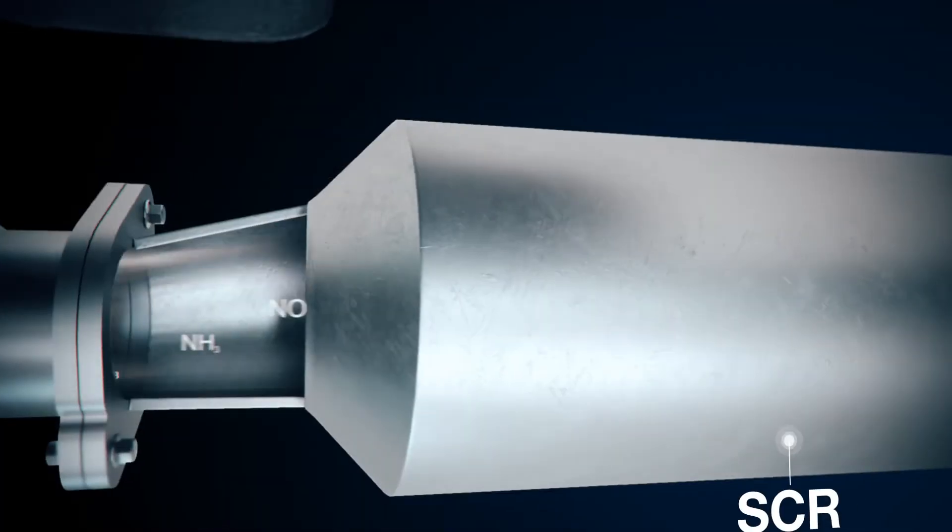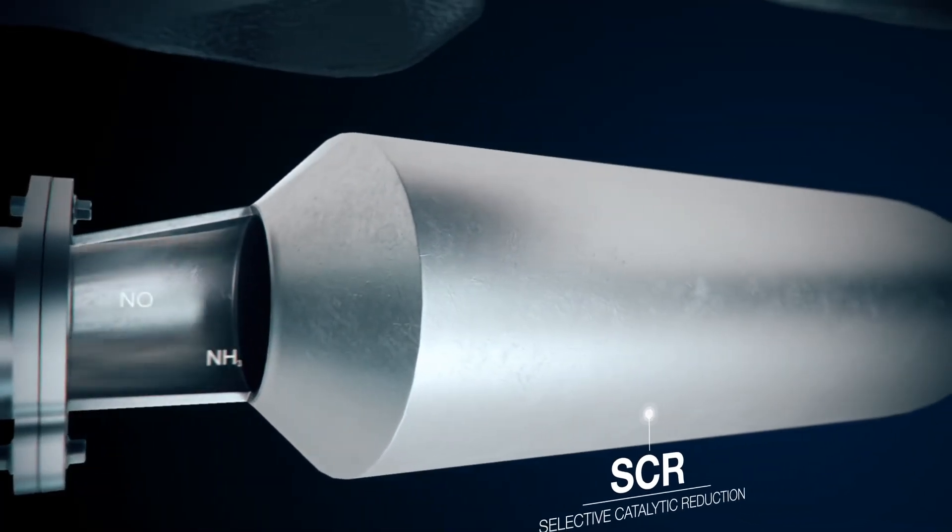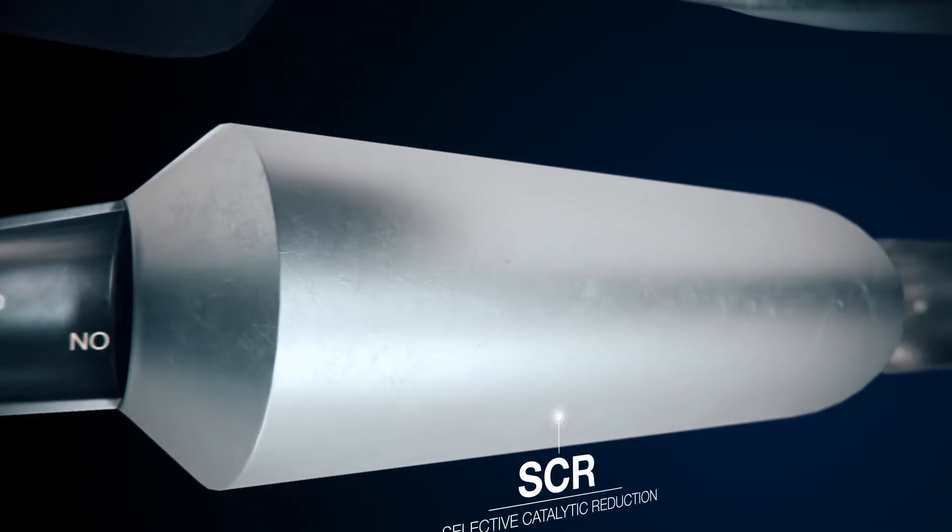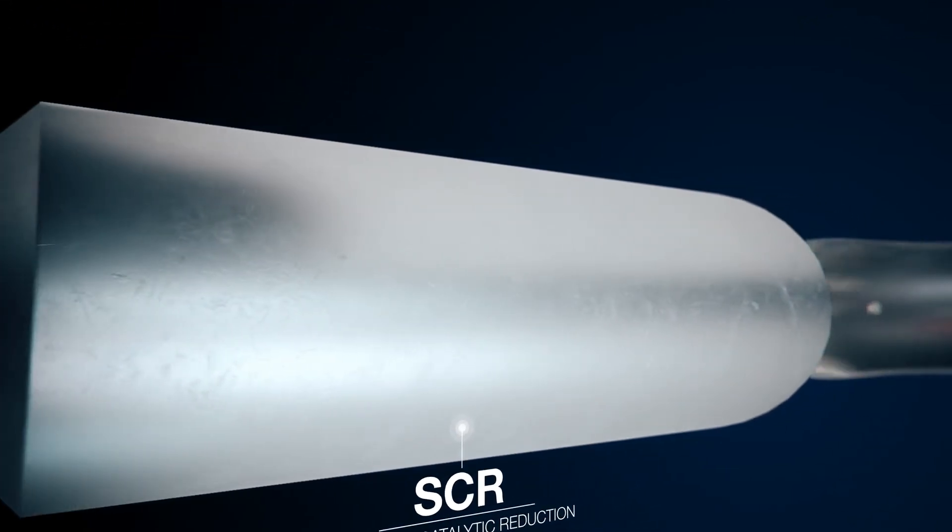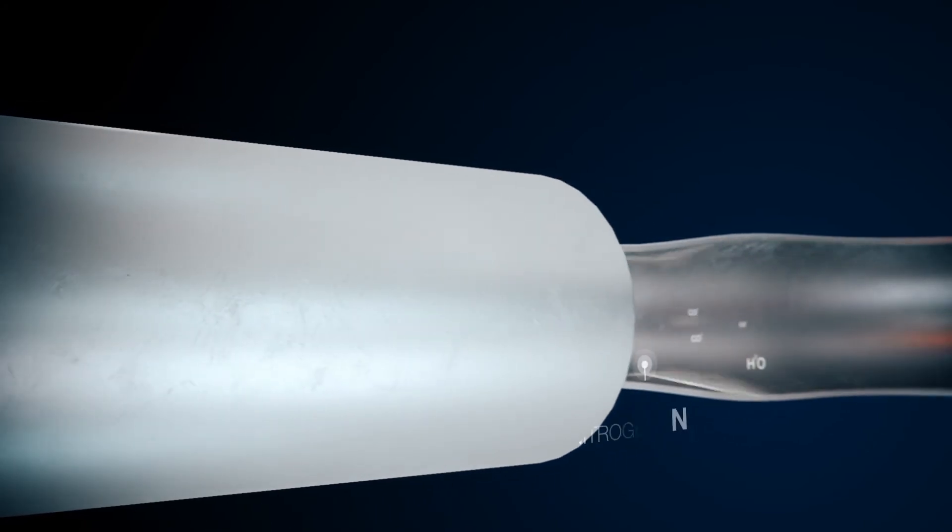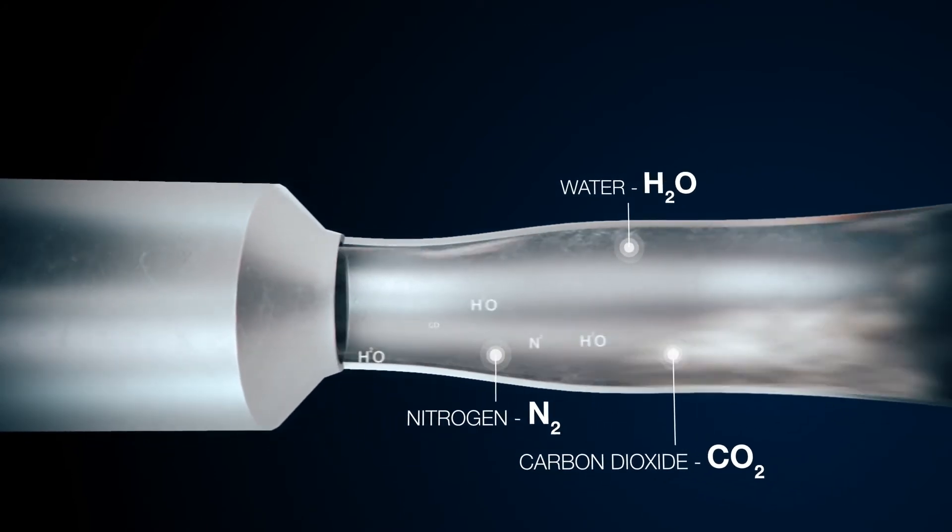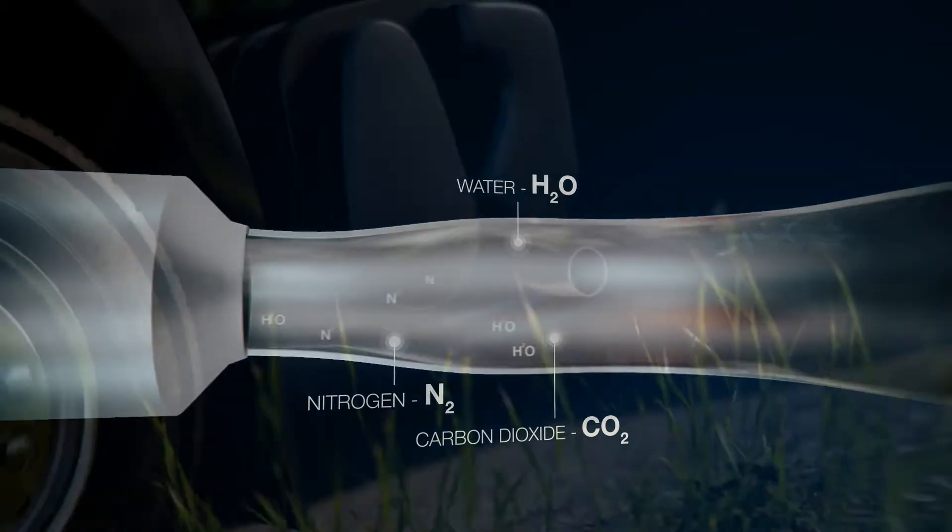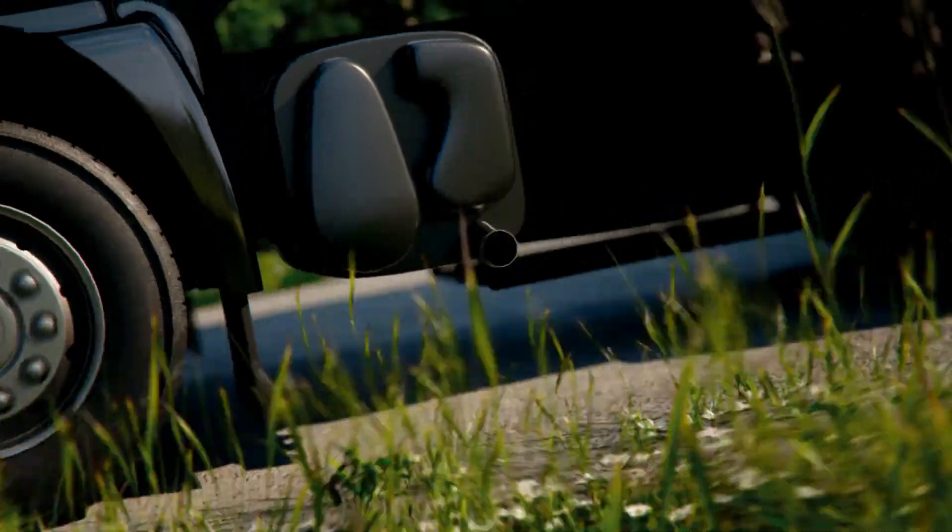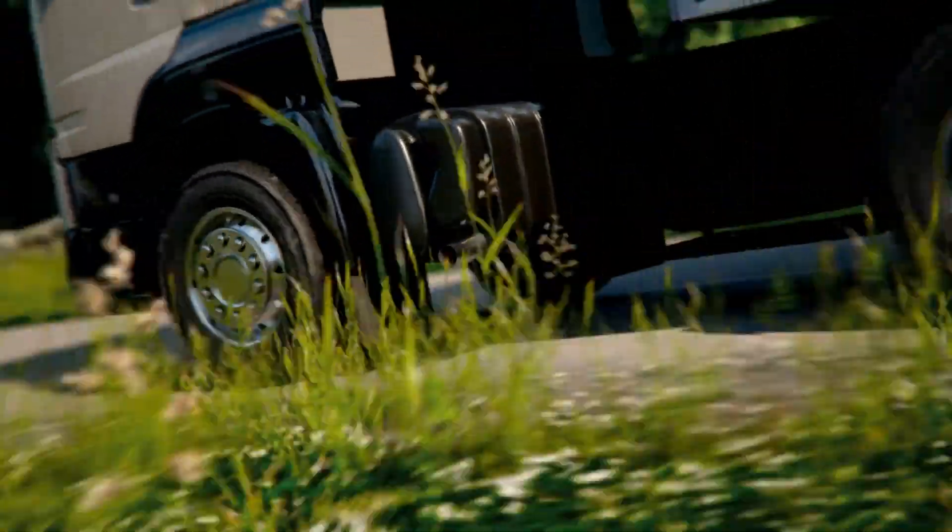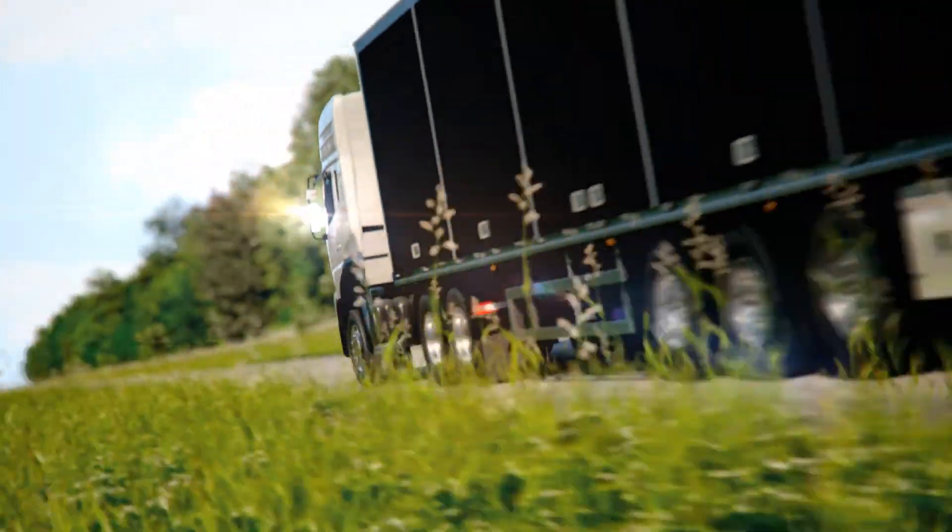When this mixture comes into contact with the catalyst, the ammonia created from the urea reacts with the nitrogen oxides to form nitrogen, water, and tiny amounts of CO2—compounds which are common to the air. This results in cleaner air free of particulate matter and harmful emissions expelled through the vehicle's tailpipe.